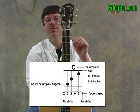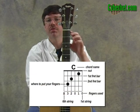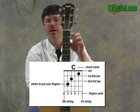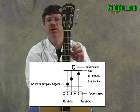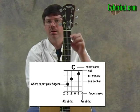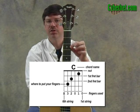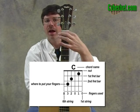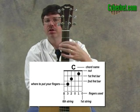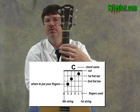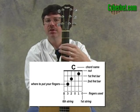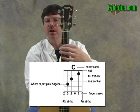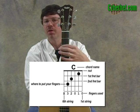The line that you see furthest to the right is going to be the first string — the thinnest string, the one closest to the floor. And the line to the left is going to be the sixth string, the lowest sounding string, or the one closest to the ceiling.